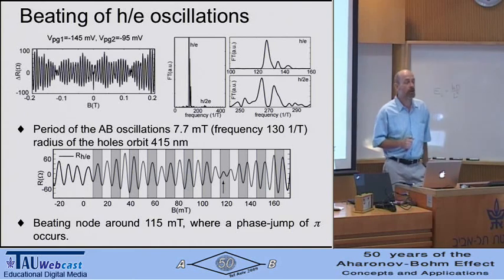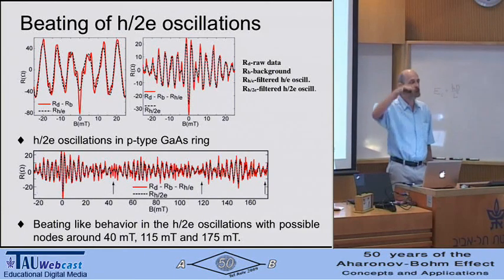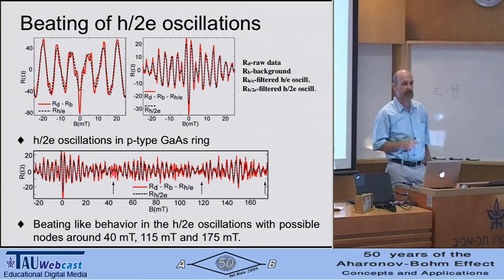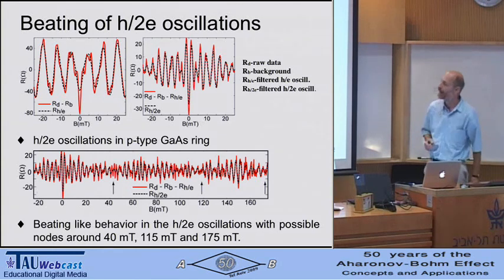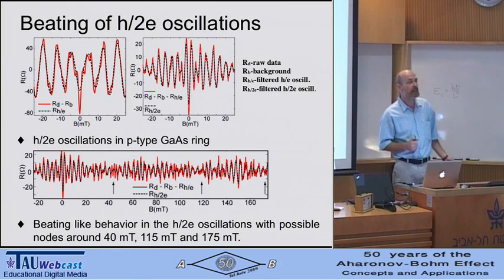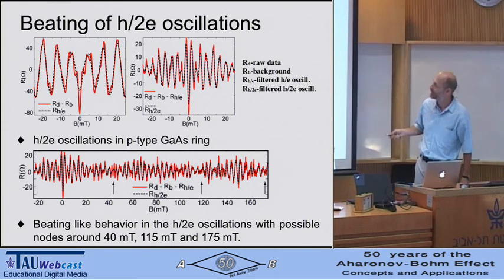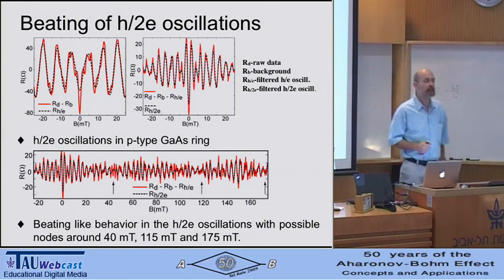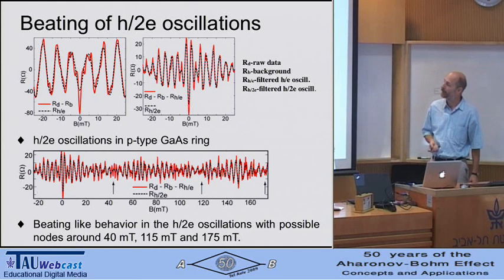The important thing is that this should also occur for higher harmonics. Looking at the h/2e oscillation—whose amplitude is typically more than an order of magnitude lower than the h/e oscillations—these correspond to the wave function going around twice along the ring perimeter. Subtracting the background gives very nice oscillations, and you see beating-like features in the h/2e oscillations, though not as clean as in the h/e case simply because of experimental resolution. You can calculate these beatings and compare to what you expect assuming the spin-orbit splitting known in P-type gallium arsenide. This is a very interesting use of the Aharonov-Bohm effect to learn about spin-orbit interactions.